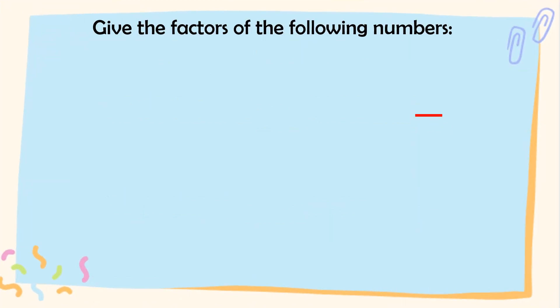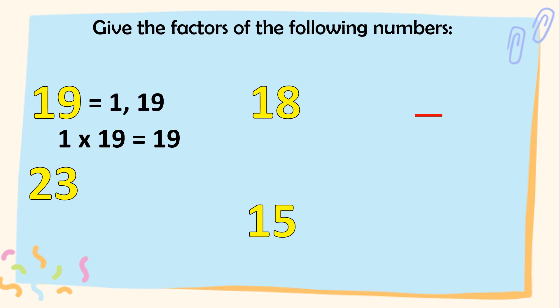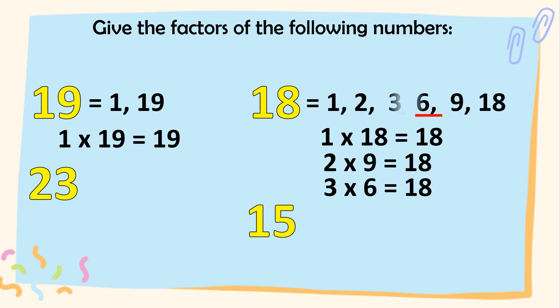Let's give the factors of the following numbers. Let's start with 19. What are the factors of 19? Correct. It's 1 times 19 is equal to 19. Meron pa ba? Wala na. So, ilalagay na natin ito dito. 1, 19. How about 18? Tama. So, the factors of it. We have 1 times 18 is equal to 18, 2 times 9 is equal to 18, and 3 times 6 is equal to 18. Ia-arrange na natin ito from least to greatest. So, we have 1, 2, 3, 6, 9, and 18.